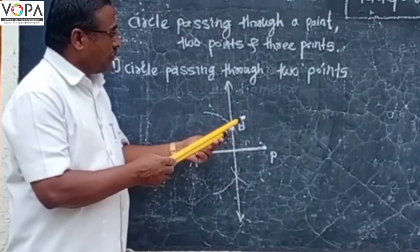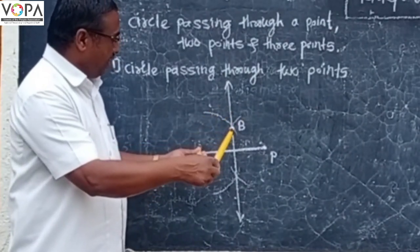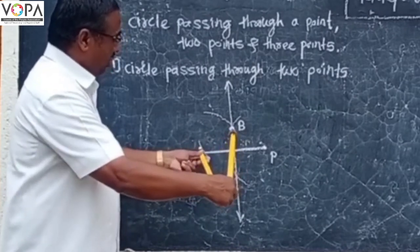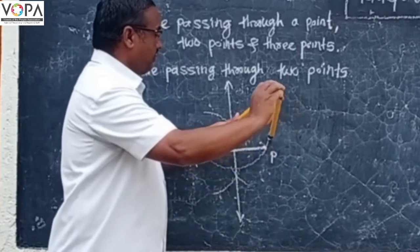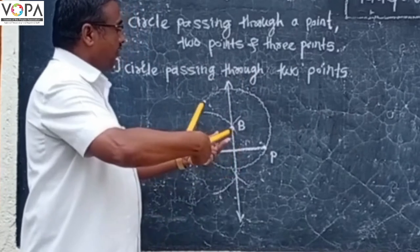Put your compass down on point B and take radius A-B. Draw a circle passing through points A and P.